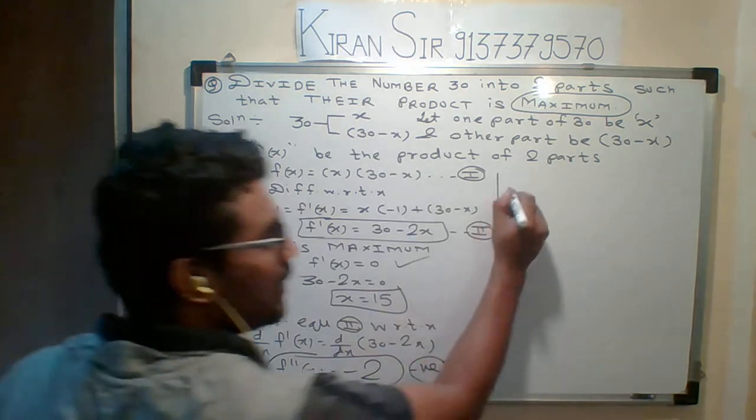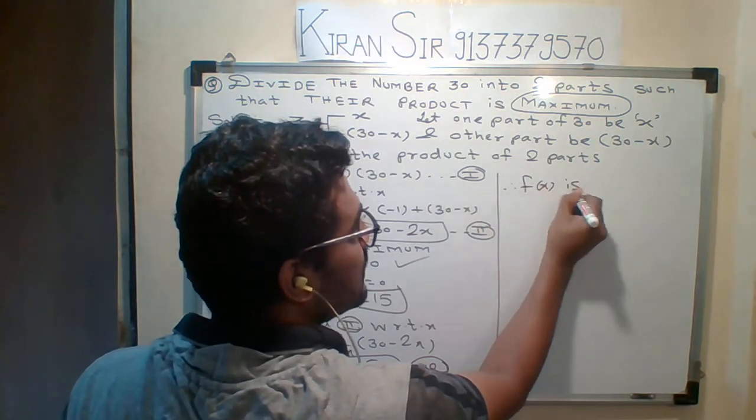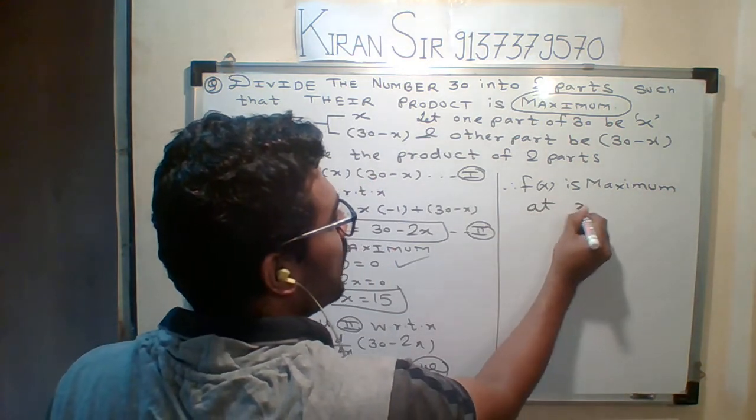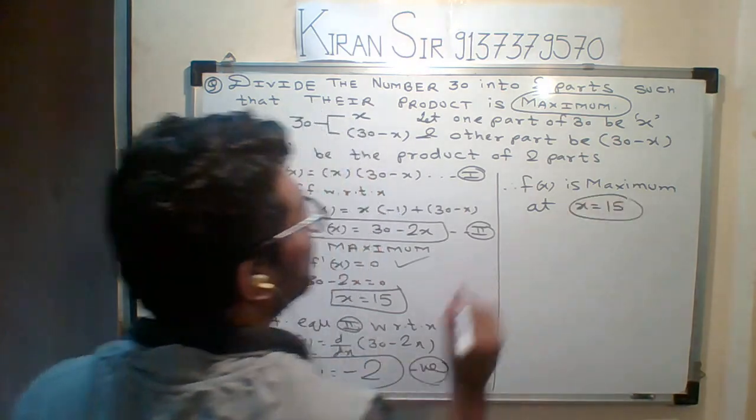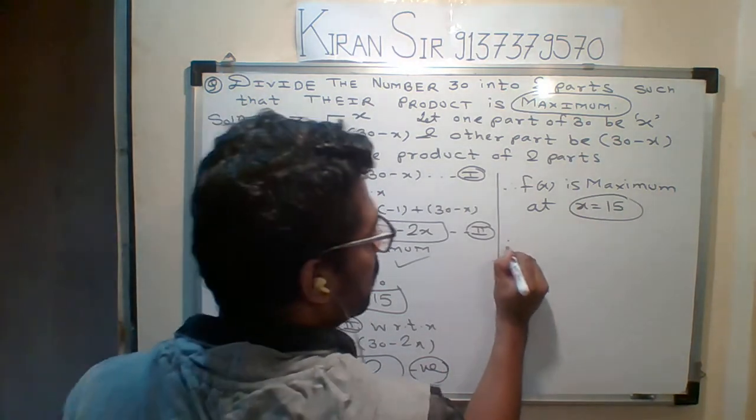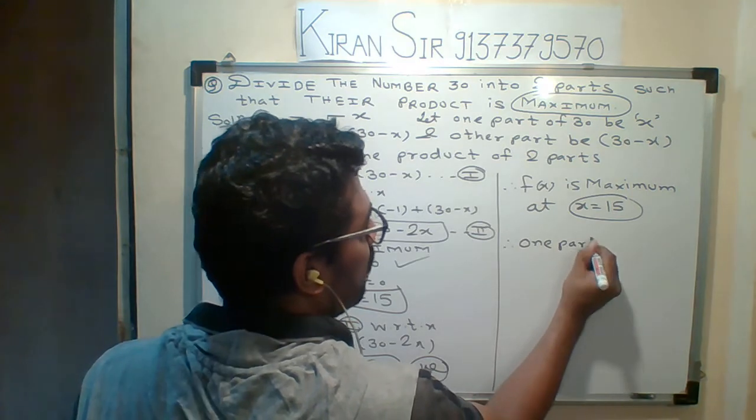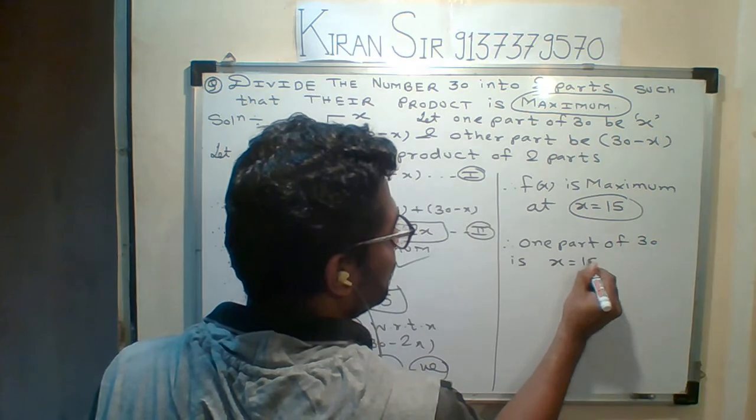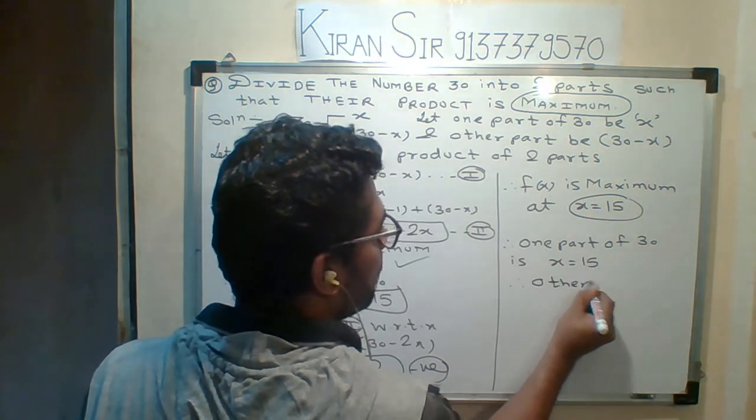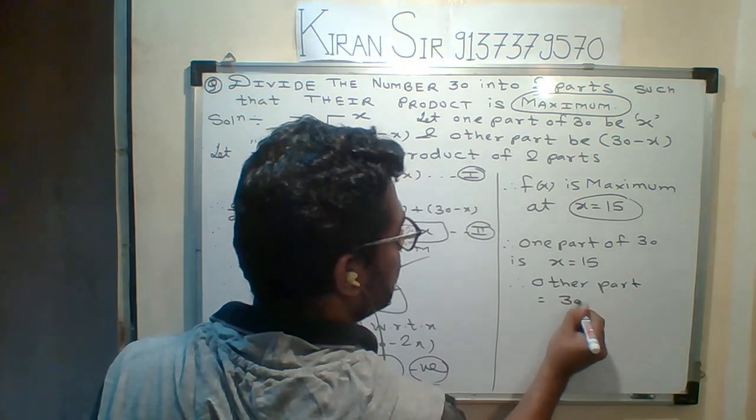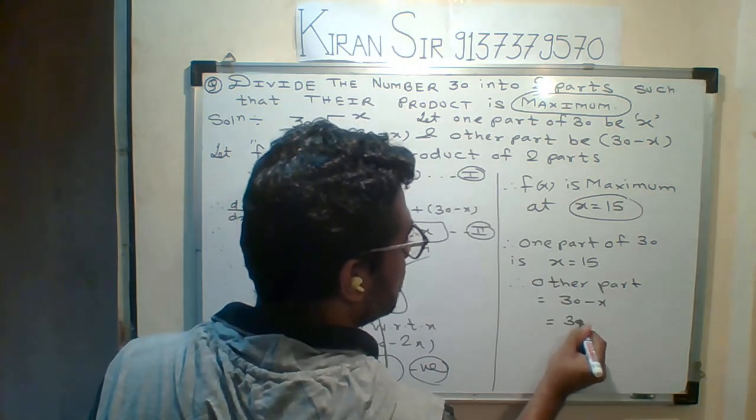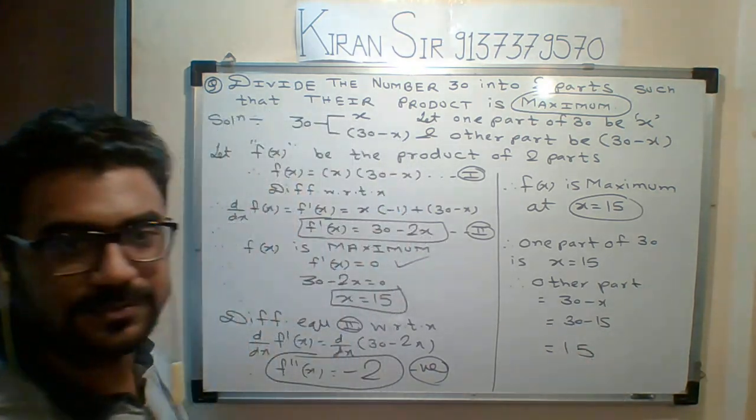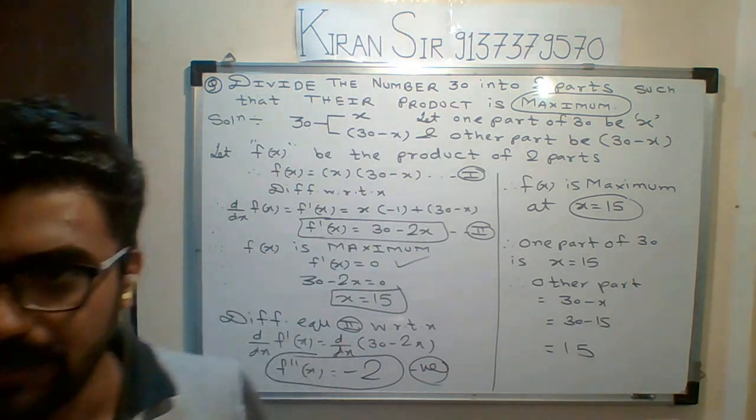Maximum at what value? x equals to 15. Proof. Therefore, one part of 30 is x equals to 15. Therefore, the other part is 30 minus x, which is 30 minus 15. The other part is also 15. So this is your final answer. Hope so you understood the numerical. Please copy.